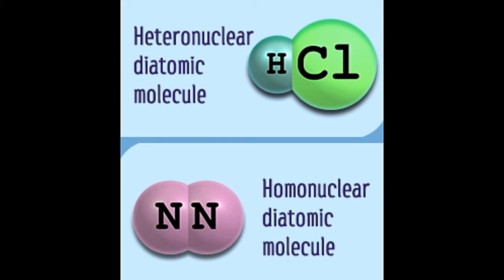Examples of triatomic molecules are O3, H2O, sulfur dioxide, etc. Depending on the type of atoms making the molecules, diatomic molecules can be classified into homonuclear diatomic molecules and heteronuclear diatomic molecules.